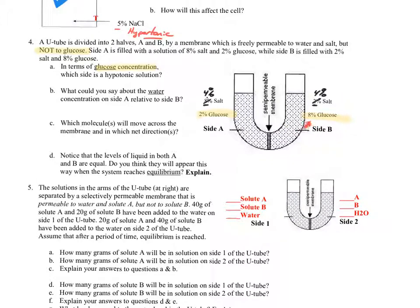So which side, in terms of glucose, is hypotonic? Hypotonic means less than the other side. Side A has 2% glucose and side B has 8% glucose. High is hypertonic, low is hypotonic. So side A is hypotonic, because it only has 2% glucose. That makes side B hypertonic. Please get it wrong today so you don't get it wrong tomorrow.